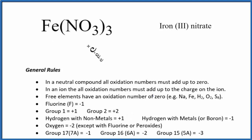The first thing to note is that Fe(NO₃)₃ is a neutral compound. There's no plus or minus like we'd see with ions, so it's neutral. And if we have a neutral compound, all the oxidation numbers need to add up to zero. So that's going to be very helpful.